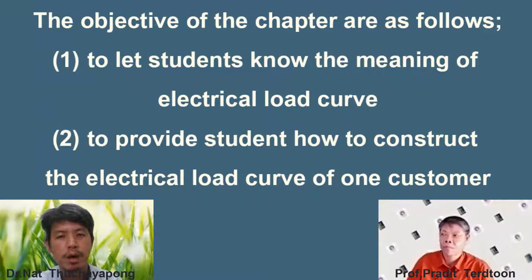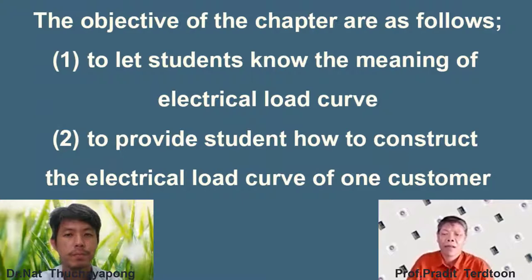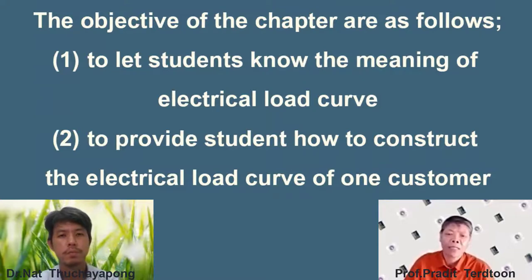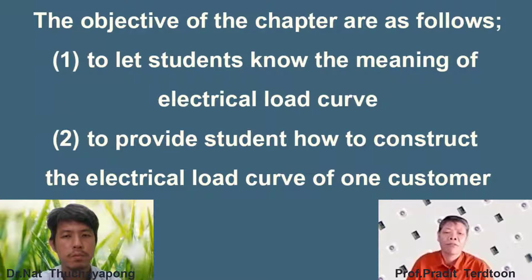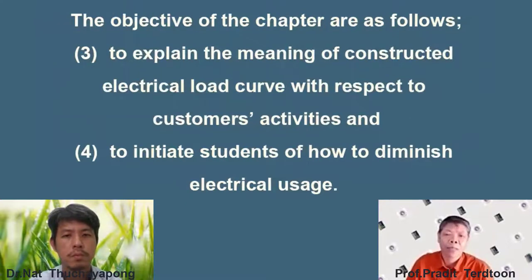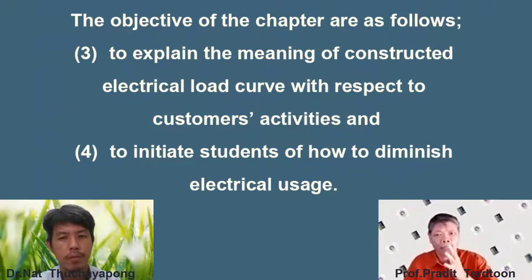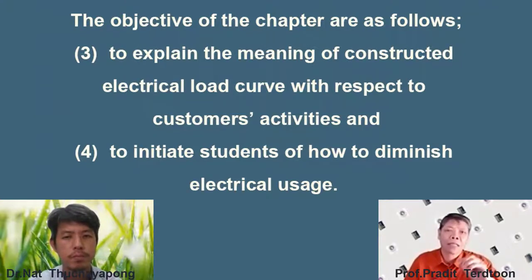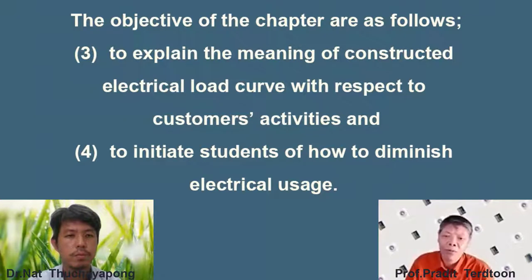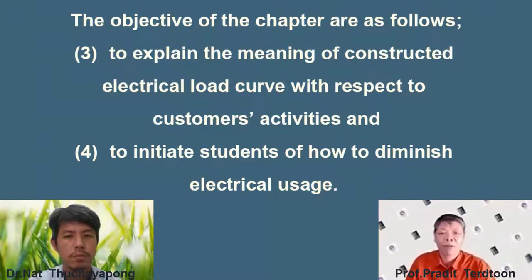What are the objectives of this research module? This chapter has four objectives. Number one is to let students know the meaning of the electrical load curve — what it is and what it means. Number two is to provide students with how to construct the electrical load curve of one customer. Number three is to explain the meaning of the constructed electrical load curve with respect to customer activity. Number four is to initiate students in how to diminish electrical usage — how to reduce the electrical bill and save the budget of the customer.